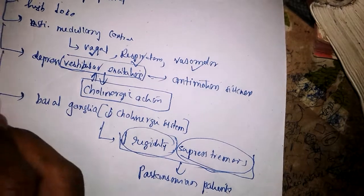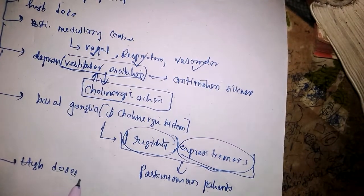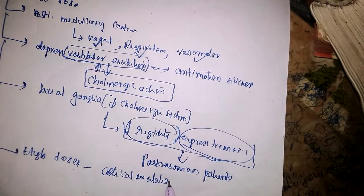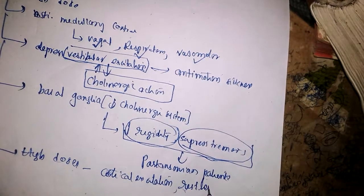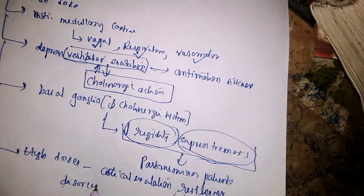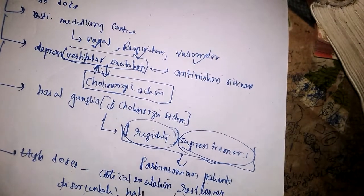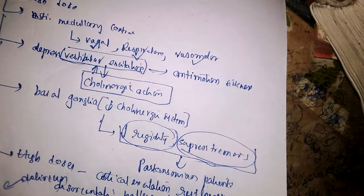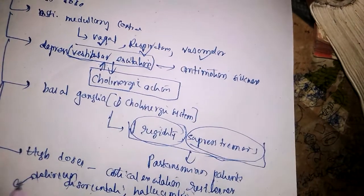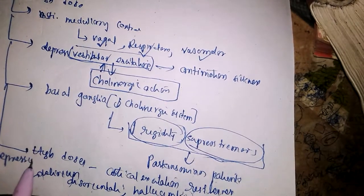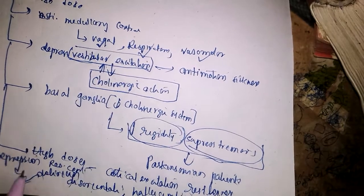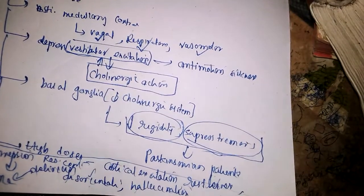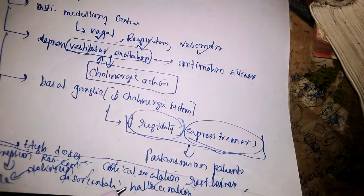If we give still higher doses, there will be cortical excitation — with restlessness, disorientation, hallucinations, and delirium. This is followed by depression of the respiratory center and coma. All these effects occur in overdose.